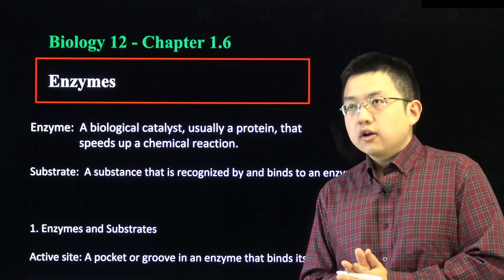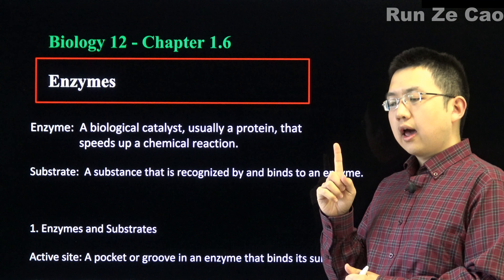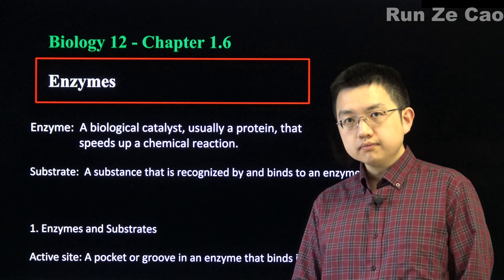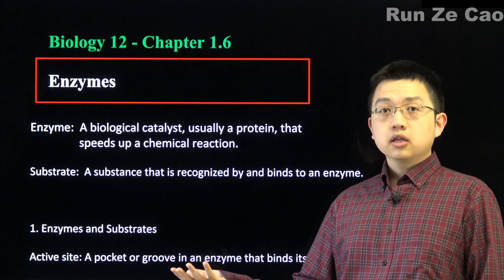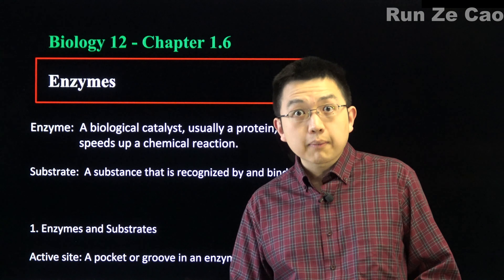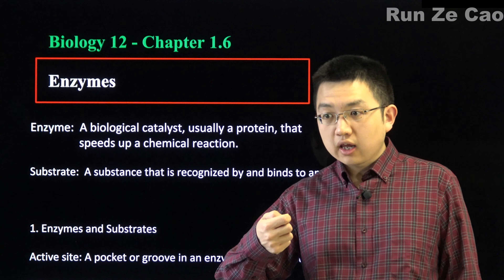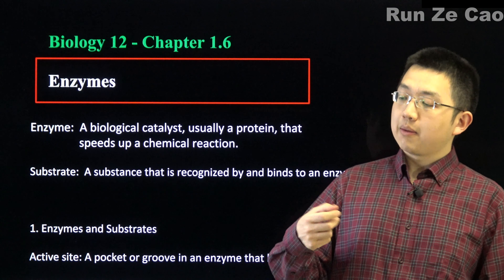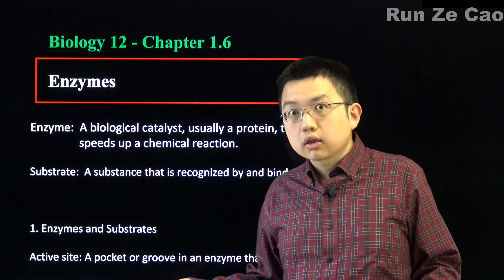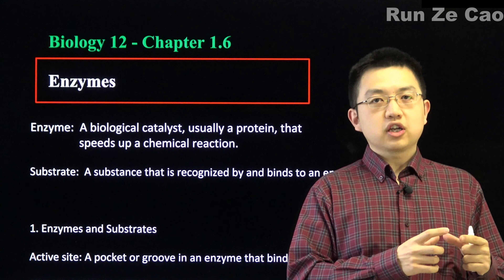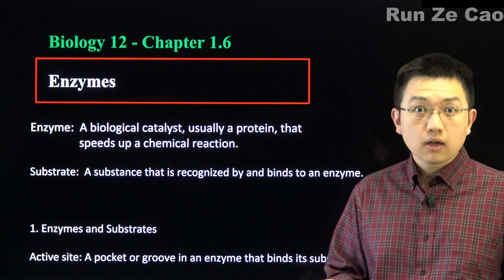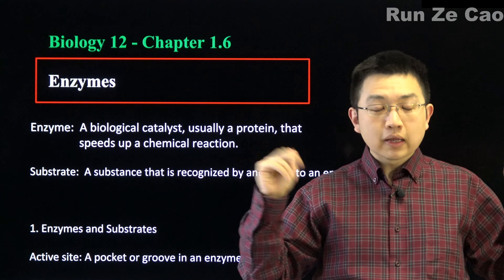We know that at gas stations there are no smoking signs, yet the combustion of gasoline is controllable — it doesn't spontaneously self-ignite at ambient room temperatures. But if we provide a little bit of activation energy, say a spark, then the reaction ends up propagating: the first gasoline molecule to combust releases energy, other gasoline molecules become activated, they combust and react with oxygen, releasing more energy.